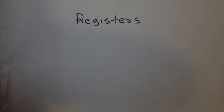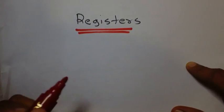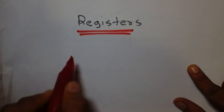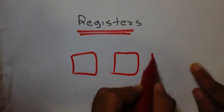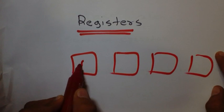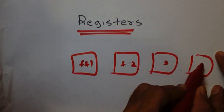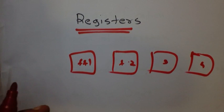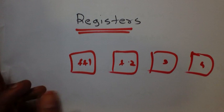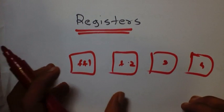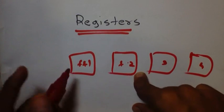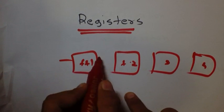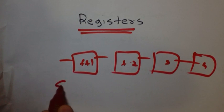Hello, welcome to this tutorial. In this tutorial we are going to study about registers. What are registers? Registers are nothing but a group of flip-flops. This is flip-flop 1, flip-flop 2, 3, and 4. We know a flip-flop stores 1 bit — 0 or 1. But if we want to store a group of data or a set of information, then we have to use more than one flip-flop. A group of flip-flops can be called a register, and they can be connected serially with one clock applied to all of them.